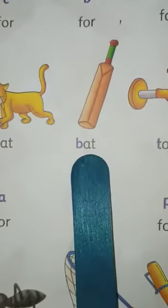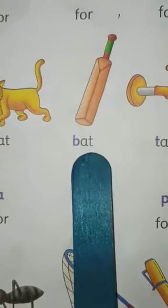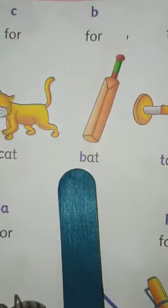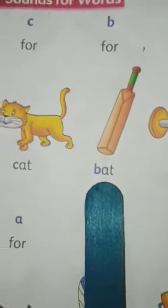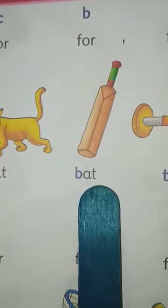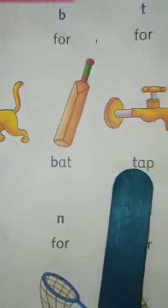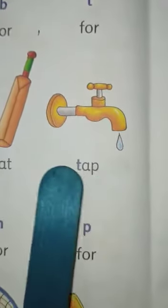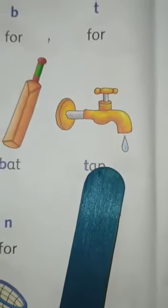When we join three letters, it will make a word. So B, A, T — Bat. T, A, P — Tab.